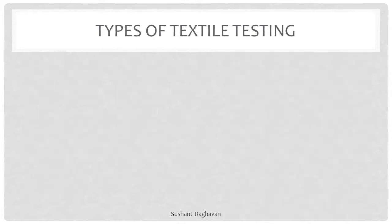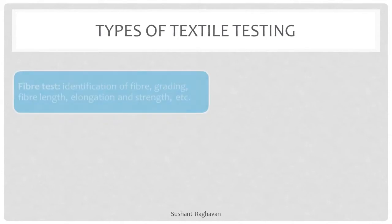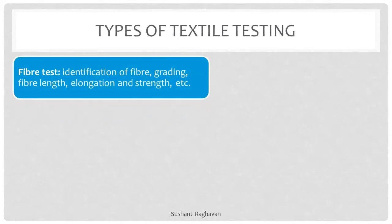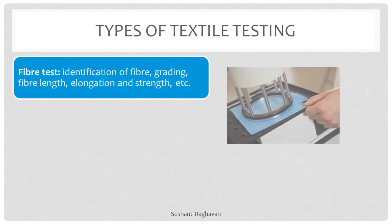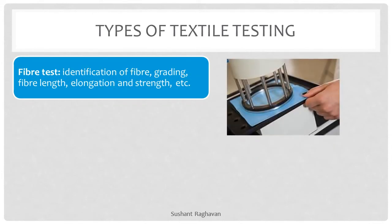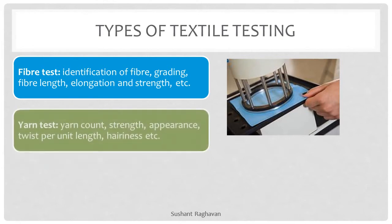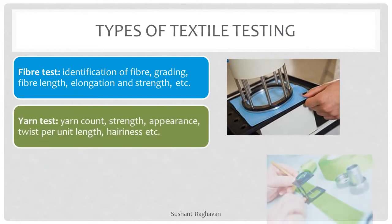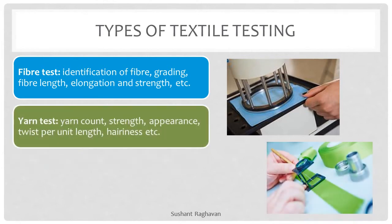Types of textile testing. Fiber test: identification of fiber, grading, fiber length, elongation and strength, etc. Yarn test: yarn count, strength, appearance, twist per unit length, hairiness, etc.